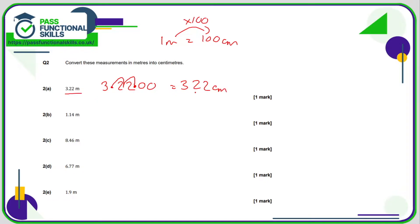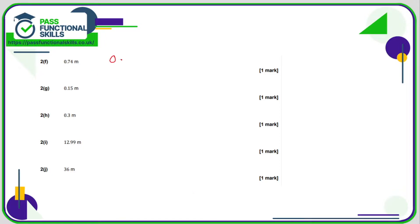So if 3.22 gives us 322 centimetres, then 1.14 gives us 114 centimetres, 846, and 677. 1.9 can be written as 1.90, so that's 190 centimetres. 0.74 — multiply by 100, giving 74 centimetres. So 0.15 is 15 centimetres. 0.3 can be written as 0.30, so that's 30 centimetres.